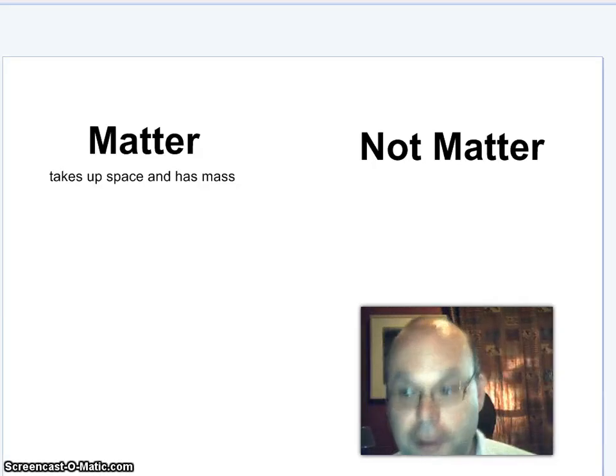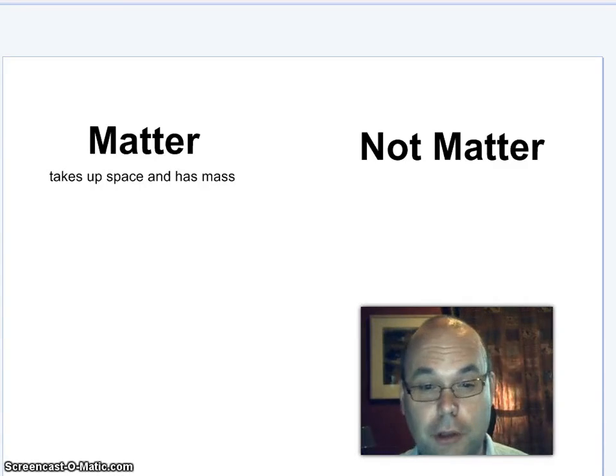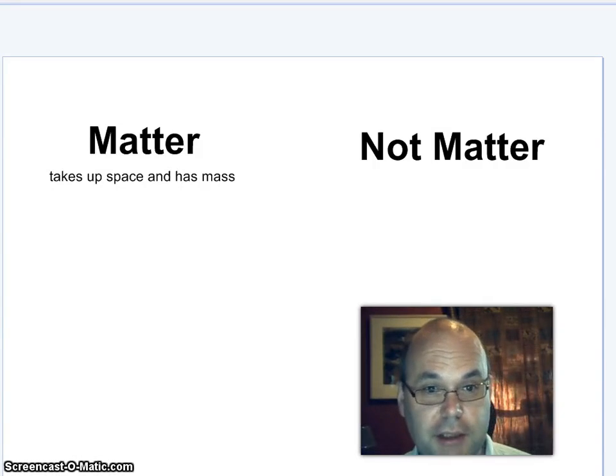Following what my friend the dog said, we're going to start putting together a flowchart of how you can classify matter. First of all, is something matter? We call it matter if it takes up space and has mass, if it's actually stuff.